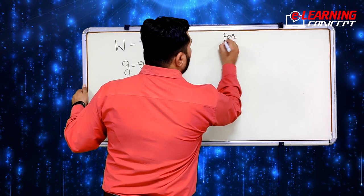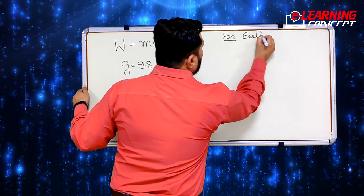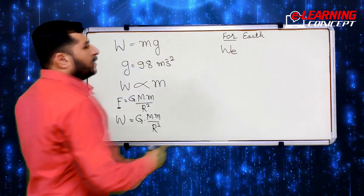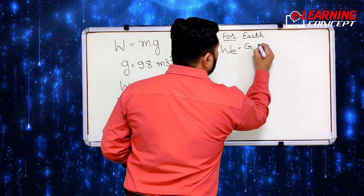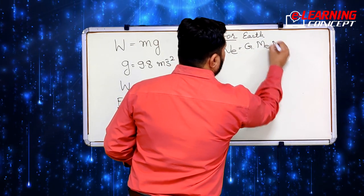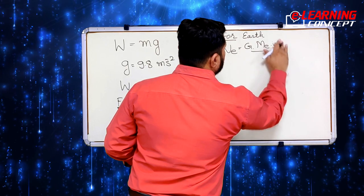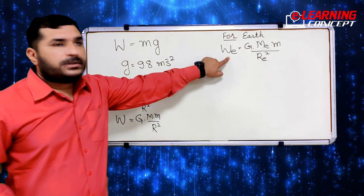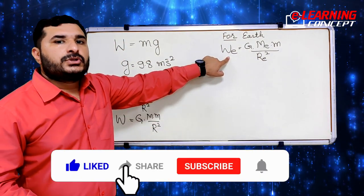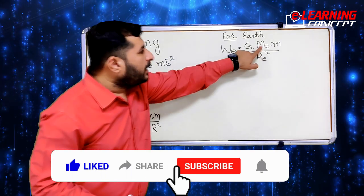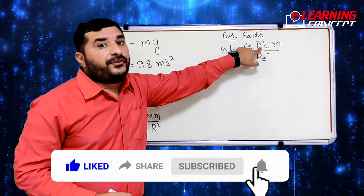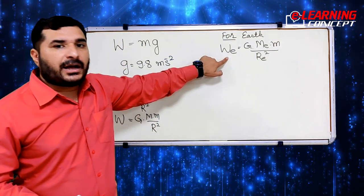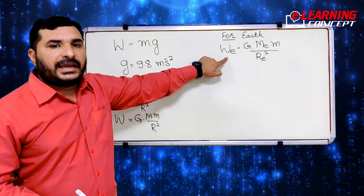For Earth, the weight W_e = G × M_e × m / r_e², where the suffix 'e' represents Earth. M_e means the mass of the Earth and r_e means the radius of the Earth. This gives us the weight equation for Earth.